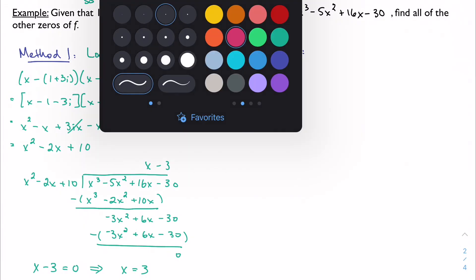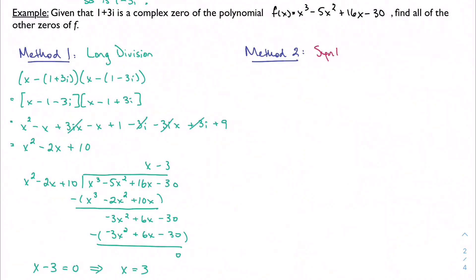I'm not saying that Method 2 is any less messy, but synthetic division is a little bit more palatable. Even if we do it with complex numbers, I think it'll go a little bit better. We can do synthetic division with complex numbers, and it's not going to be pretty, but it is going to work.